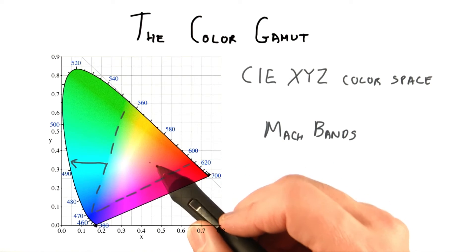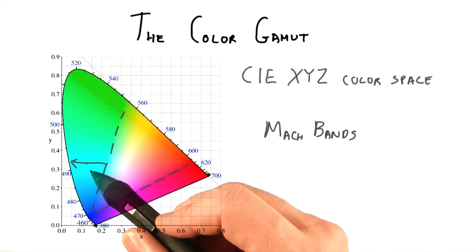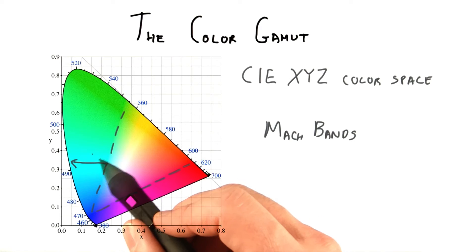What this means is that our monitors have limits on the colors that they can display. What is happening outside of these dashed lines is that the illustrator is just faking it, by picking the best possible color and repeating it on out to the edge of the curve.